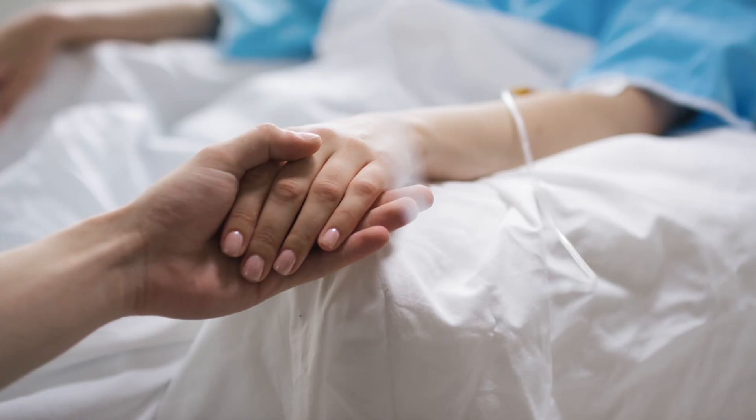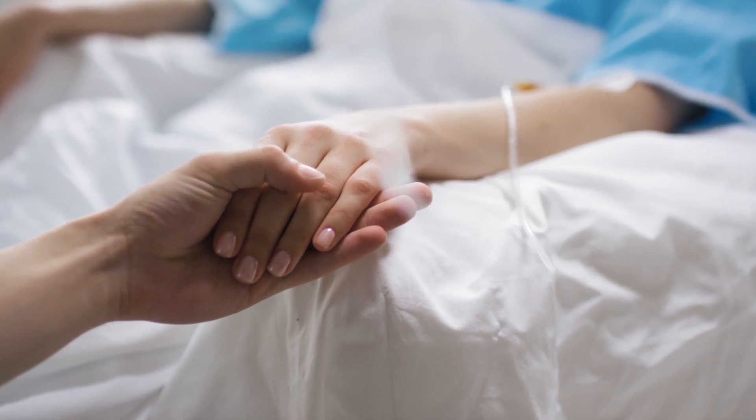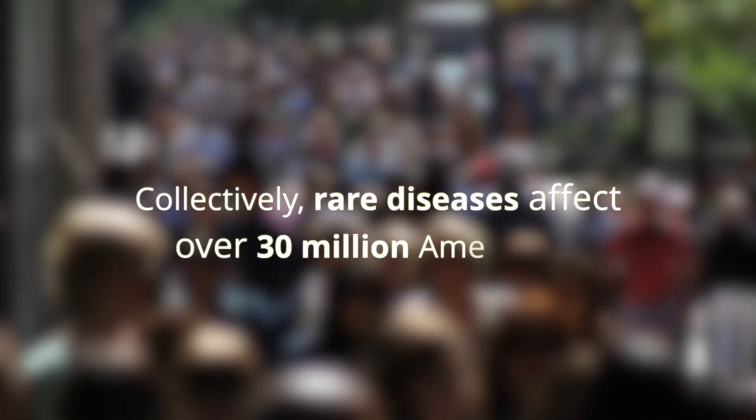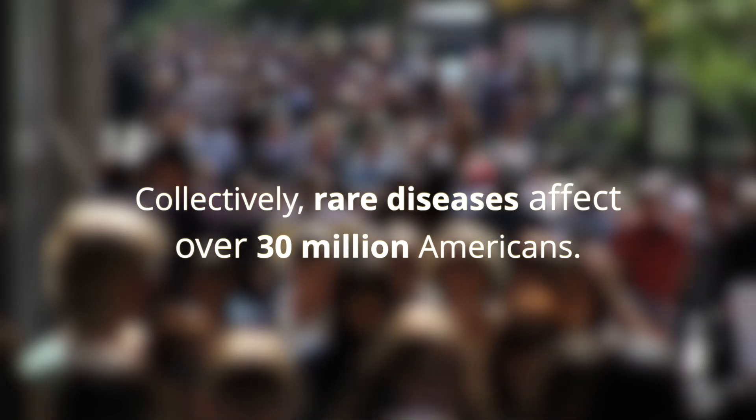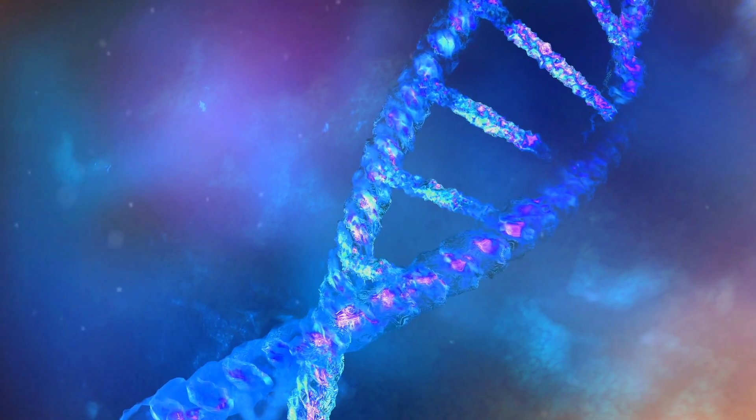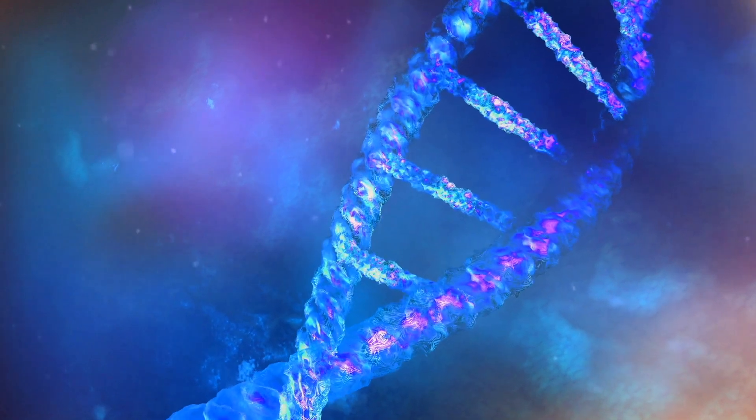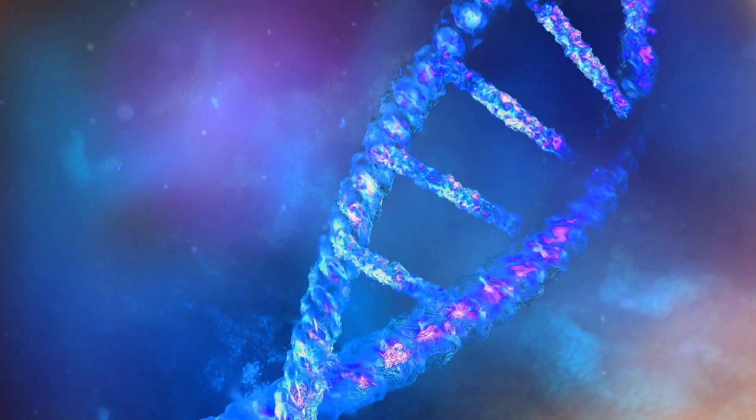A rare disease is a disease that affects fewer than 200,000 Americans. So individually these diseases are rare, but collectively they affect over 30 million Americans. Many rare diseases are genetic diseases, which means they arise because of a mutation — or you can think of it as a spelling mistake in the DNA sequence.